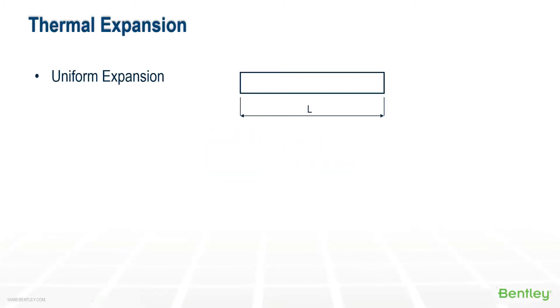There are a number of thermal expansion categories. The first is uniform expansion, where the average temperature across the cross-section is taken. The temperature introduces longitudinal growth equal to the length times the expansion rate.